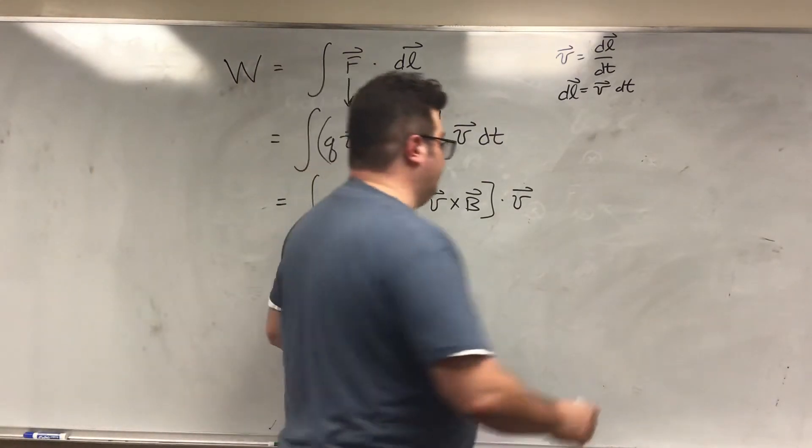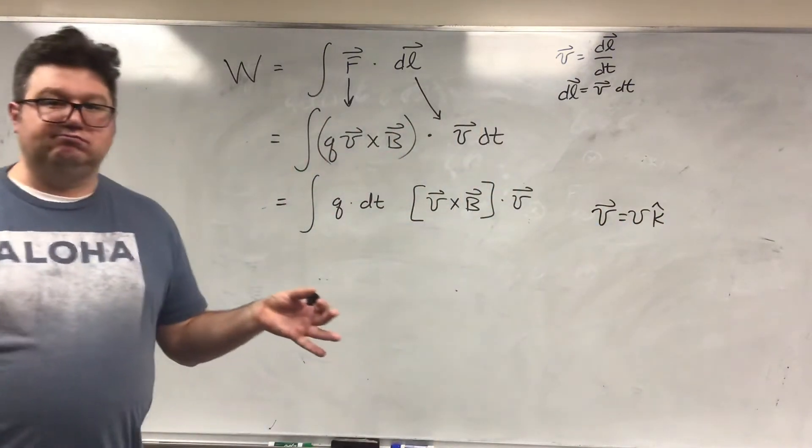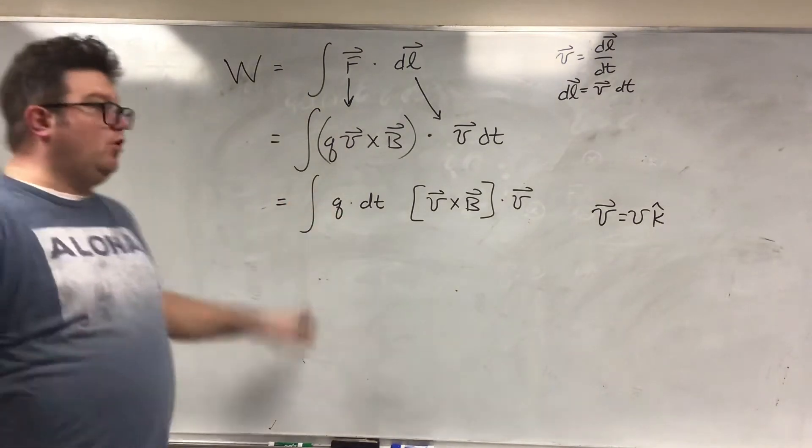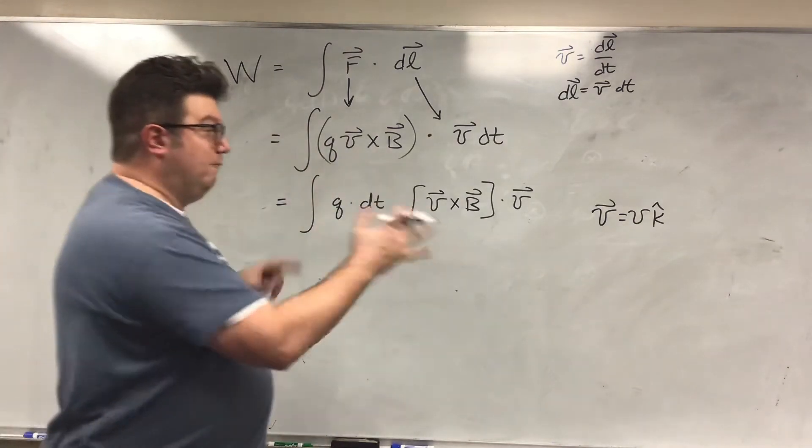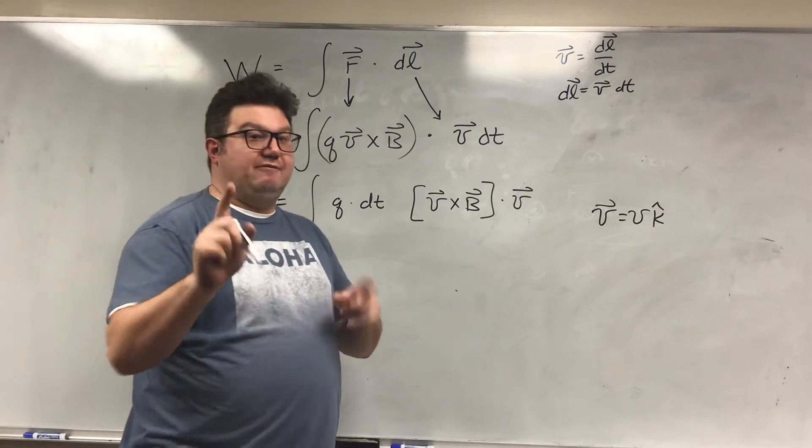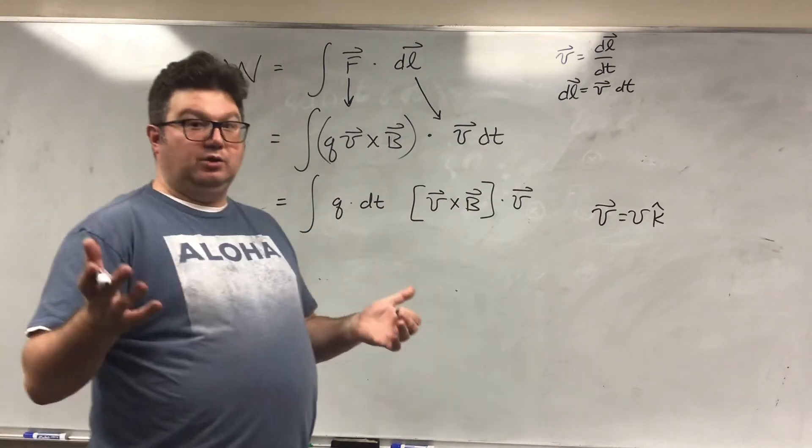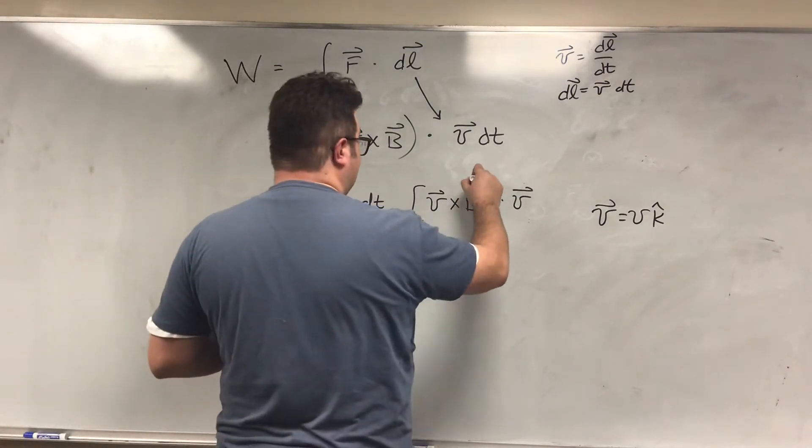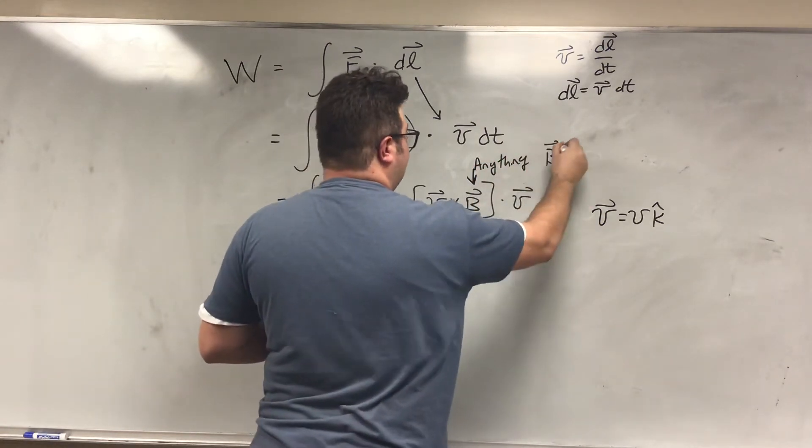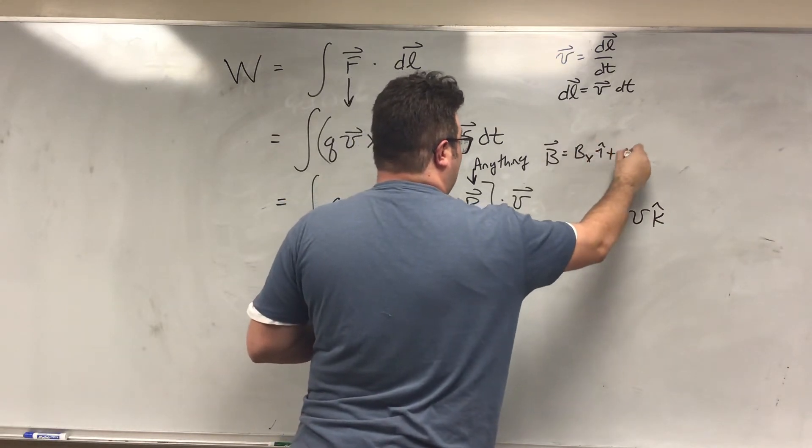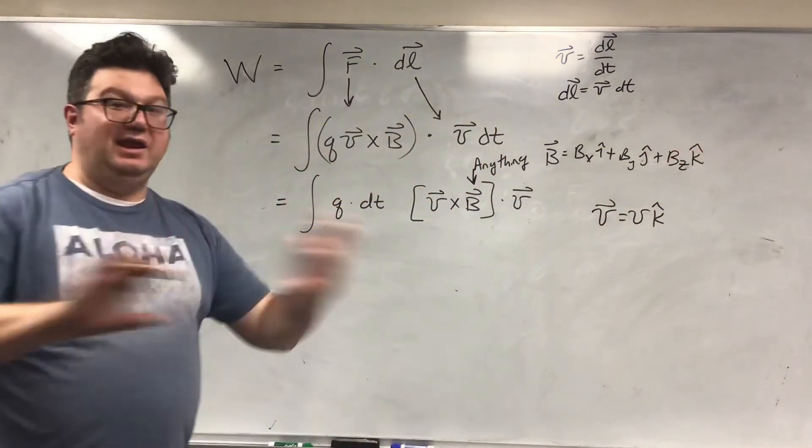Let's define our coordinate system so that V vector is equal to Vk. I can define whatever coordinate system so that at the moment I look at the velocity that I'm interested at, that velocity is going in the k hat direction of the coordinate system that I defined. We cool? The magnetic field could be anything. So the magnetic field is bx i hat plus by j hat plus bz k hat. Anything.